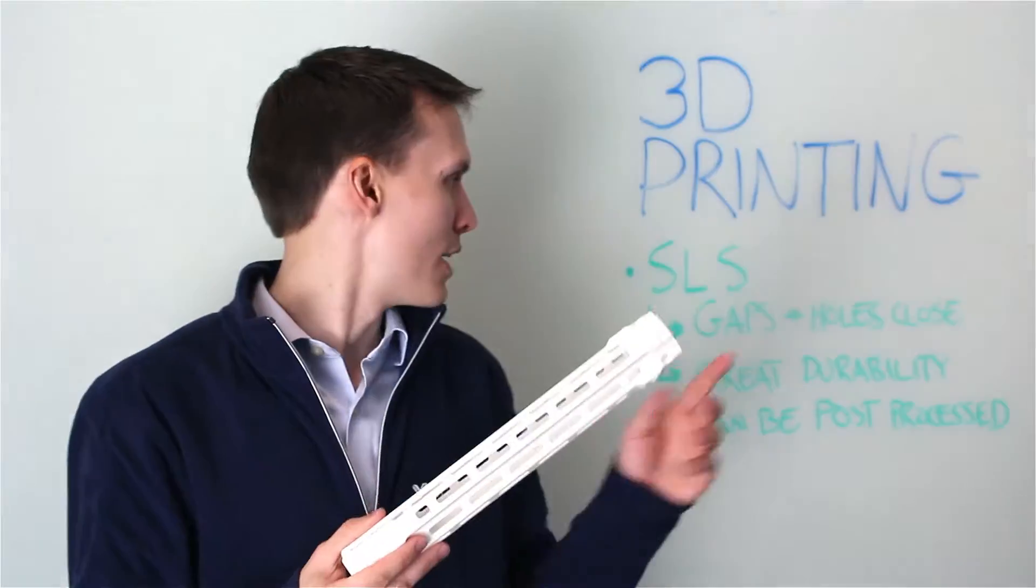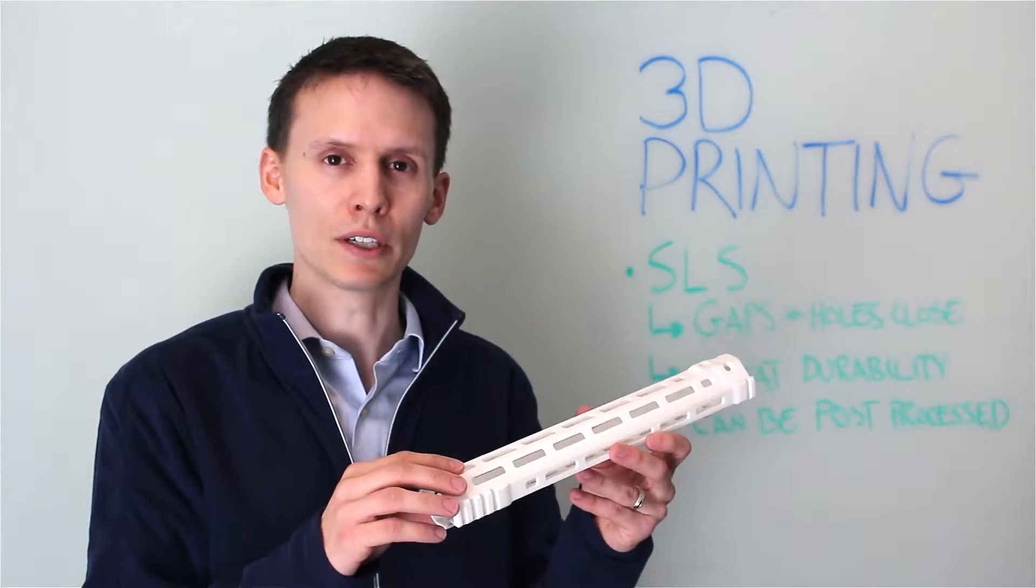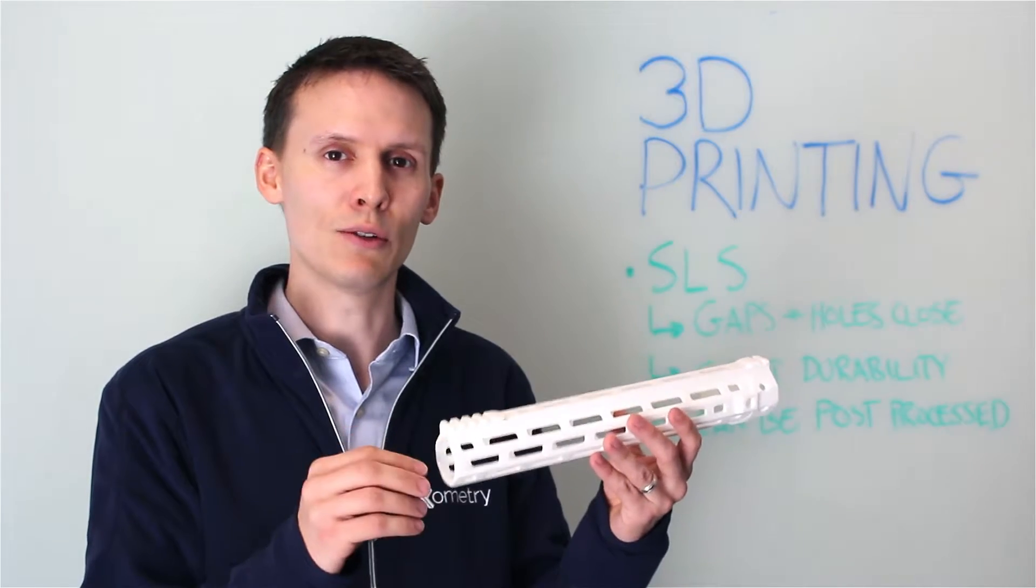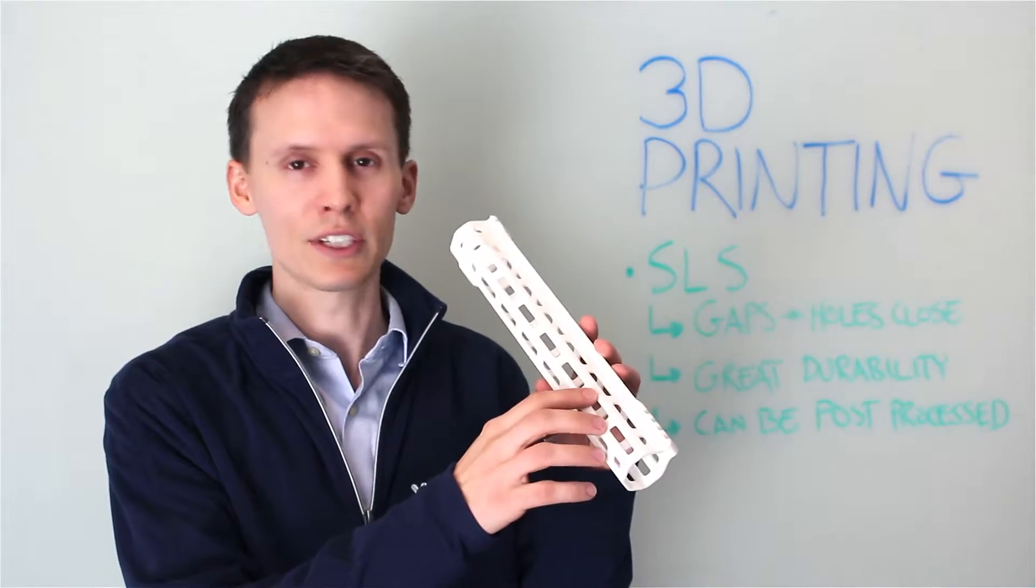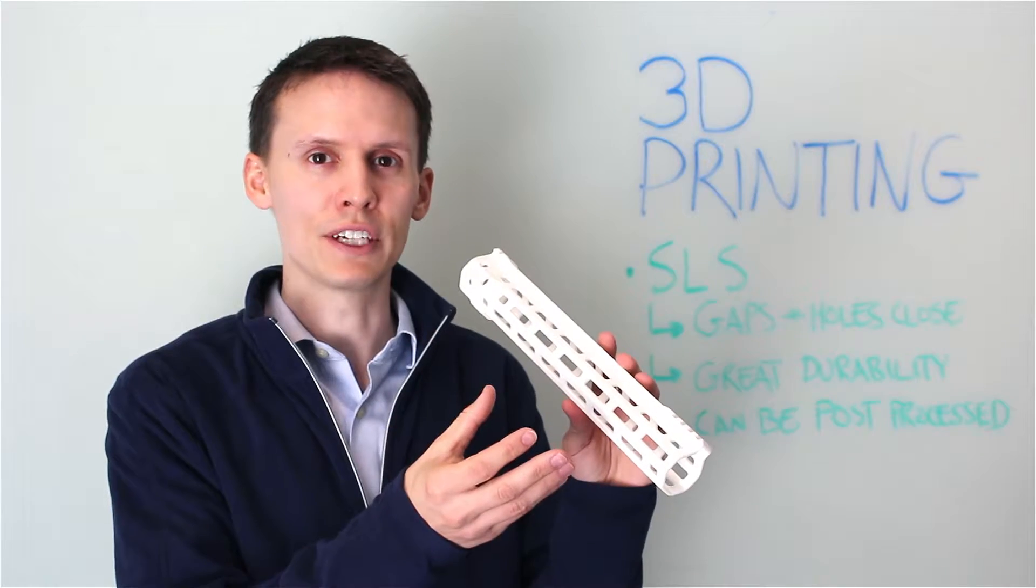Some things to keep in mind is that small gaps and holes tend to close up on these parts. Solventry will try to drill out any holes that are accessible, but always make sure that if you have a slot, for example, that's important to you to add an offset to that.